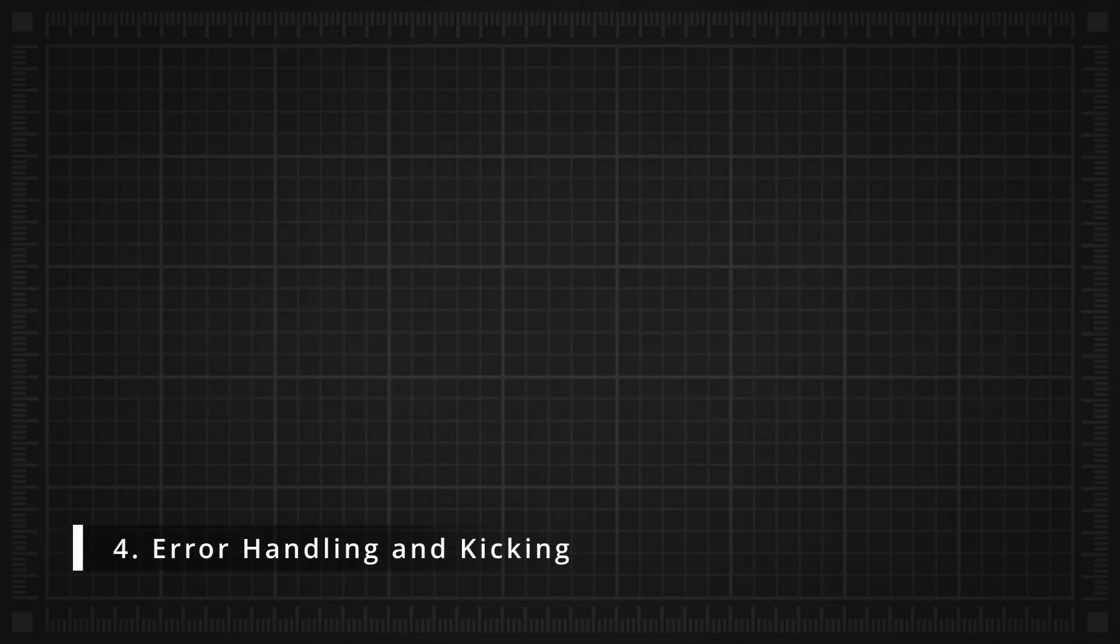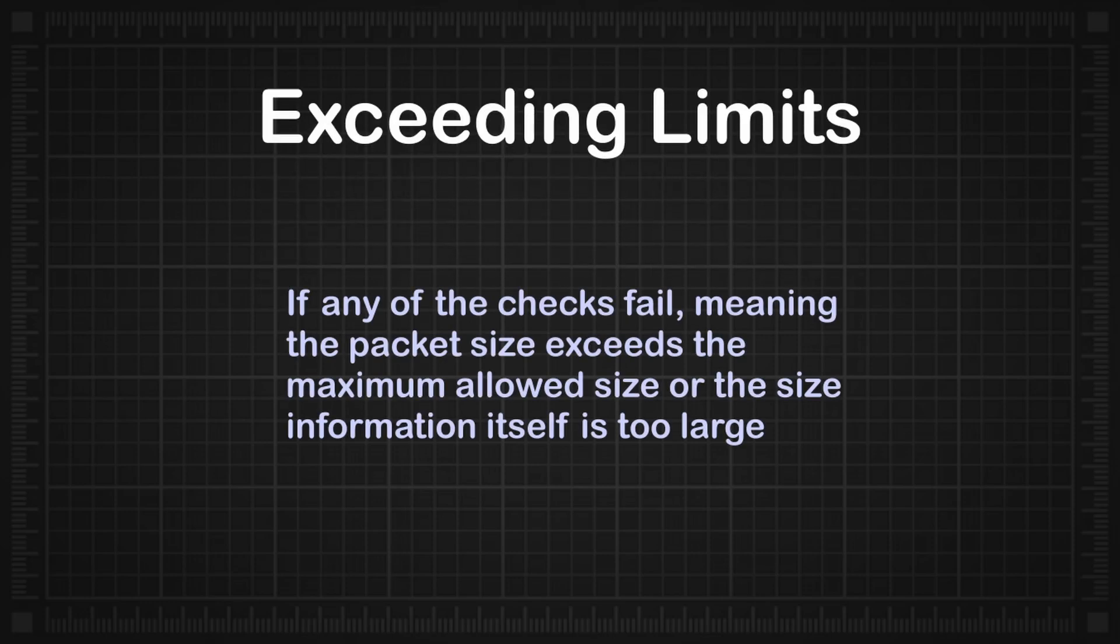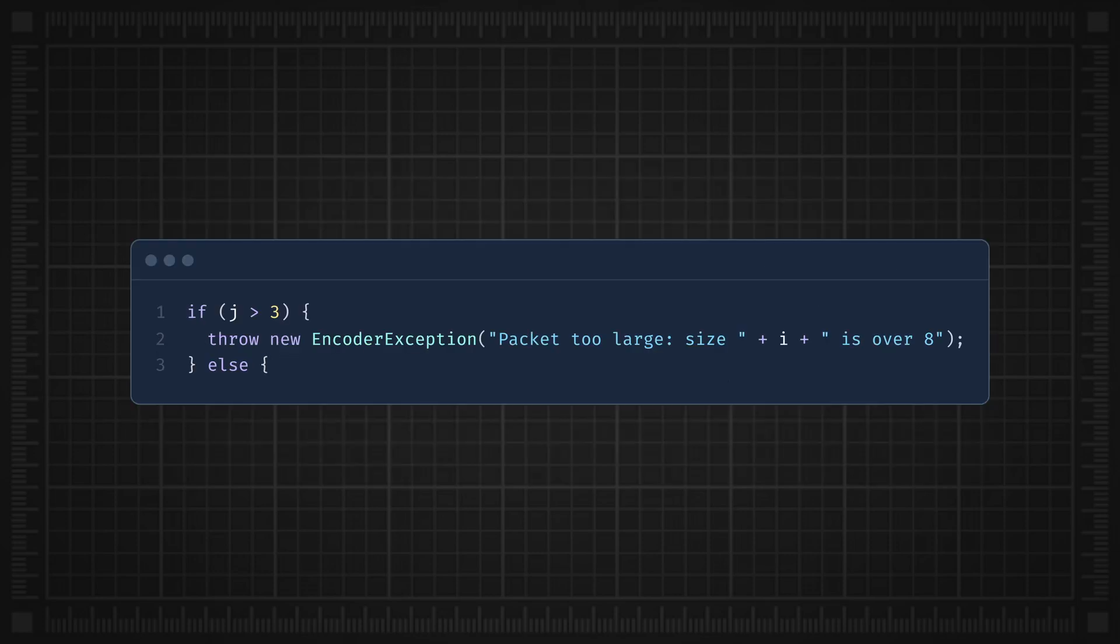Four: Error handling and kicking. Exceeding limits: If any of the checks fail, meaning the packet size exceeds the maximum allowed size or the size information itself is too large, then the server throws an exception, such as decoder exception or encoder exception.